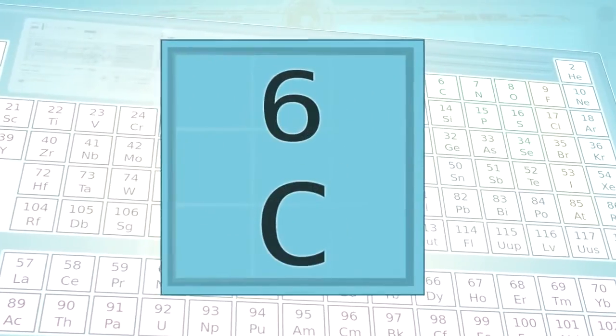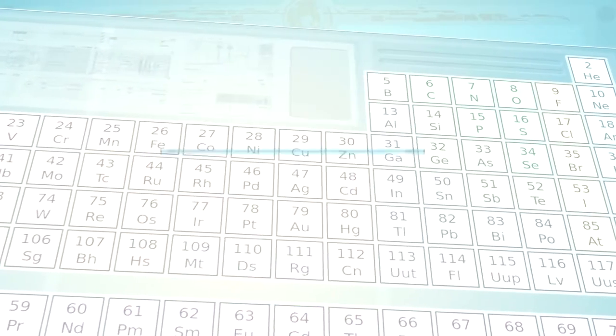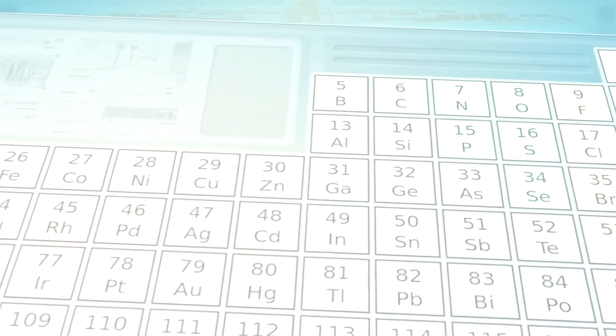Graphene is made out of plain old carbon, one of the most common and familiar elements out there, so scientists were surprised to find this new form of carbon had such amazing properties.